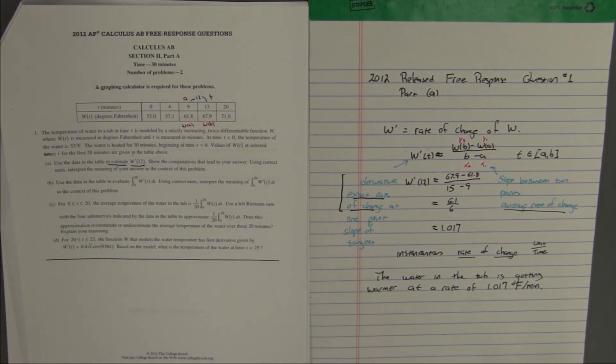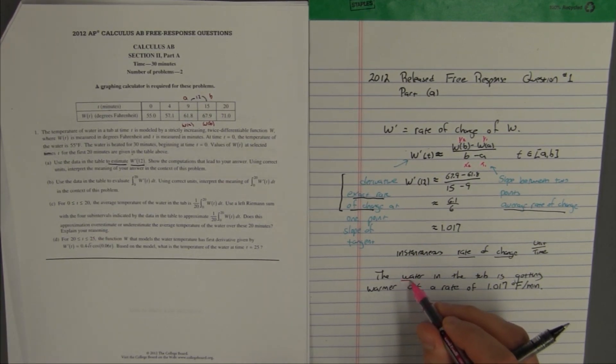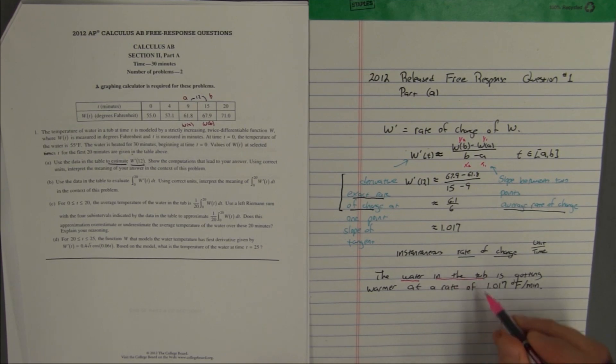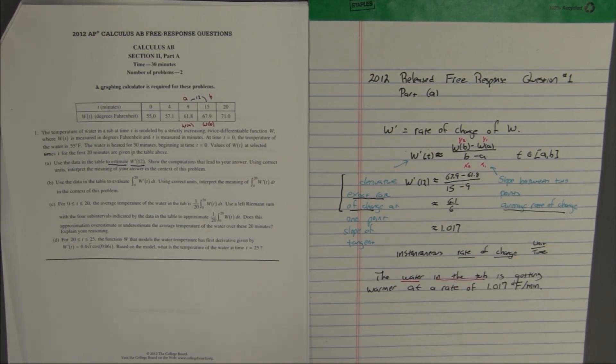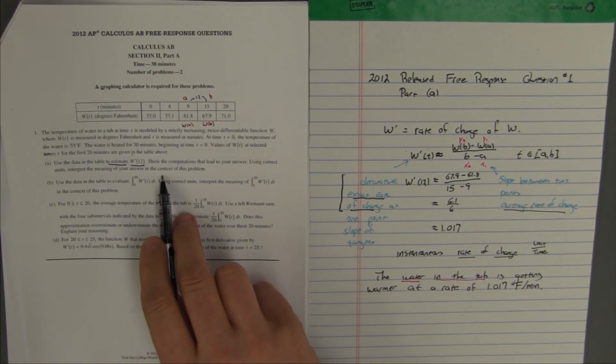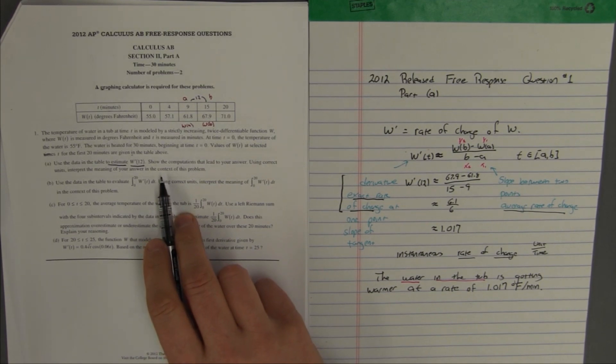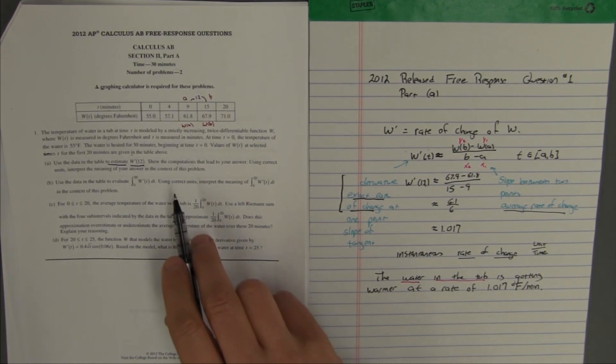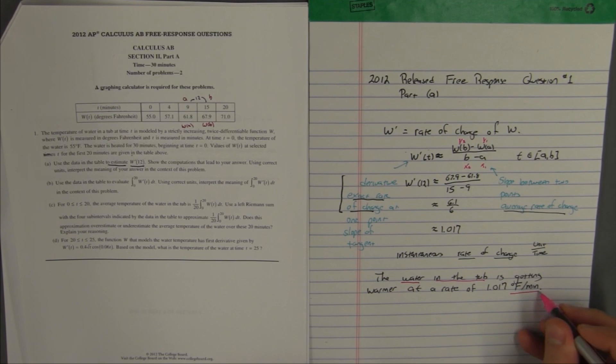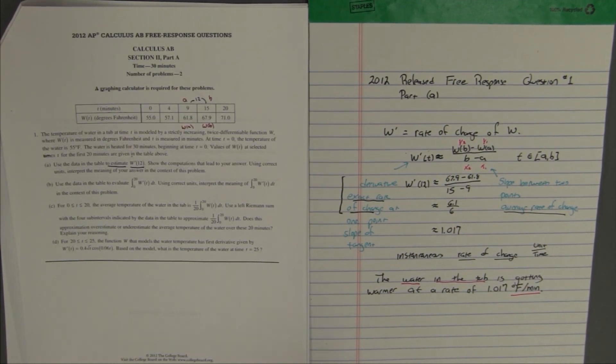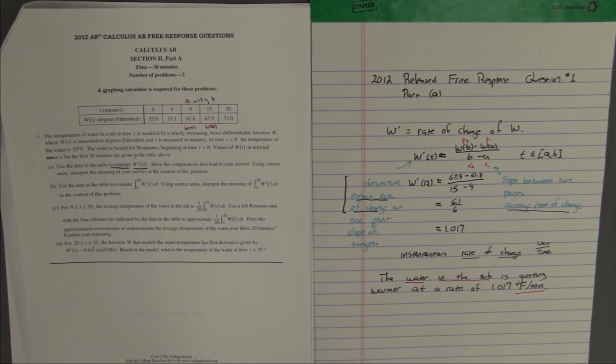Look, the context of this problem, they emphasize that in their directions. The context of the problem means we must refer to the water in the tub. If I don't refer to the water in the tub, I have not appealed to the context of the problem, and I need to do that. And where are my correct units? My correct units are right here. So here's my sentence interpreting the meaning of the answer in the context of this problem.